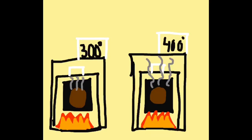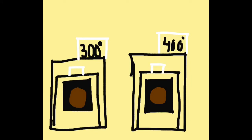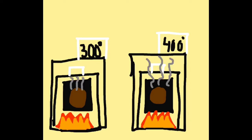Increasing the temperature increases the reaction rate, so the cake baking at 400 degrees Fahrenheit will bake quicker than the cake baking at 300 degrees Fahrenheit.